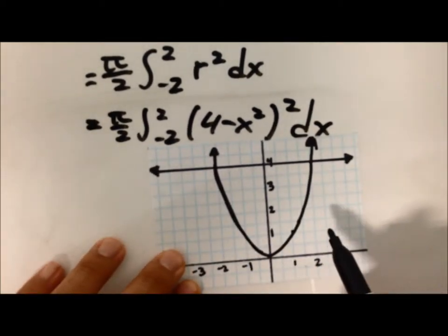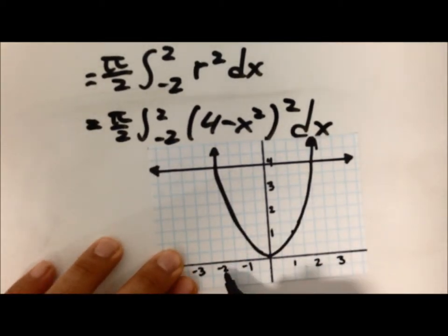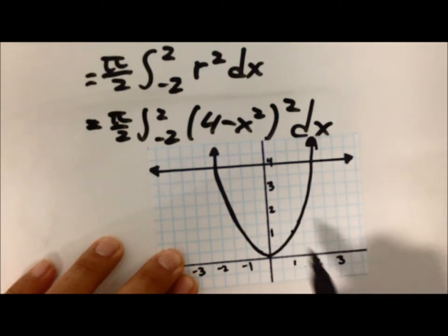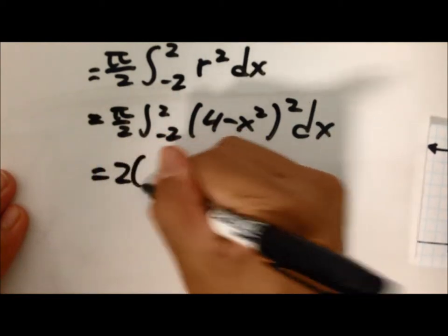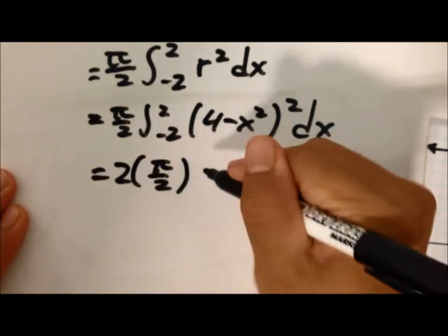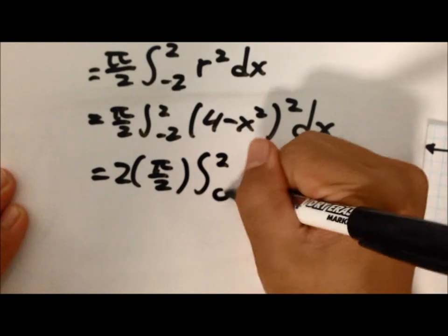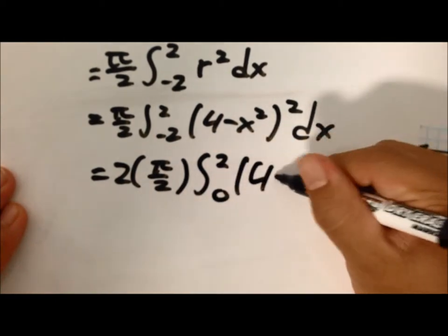and from negative 2 to 0 and 0 to 2 have the same area, we can multiply this integral by 2 and change its limits to 2 to 0, which will simplify your work a lot.